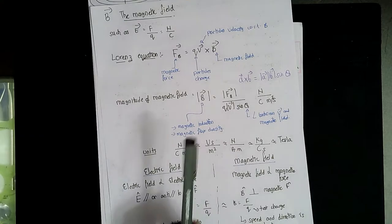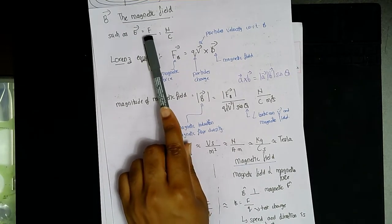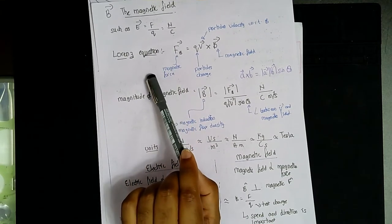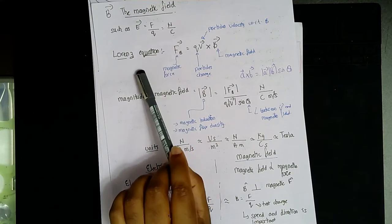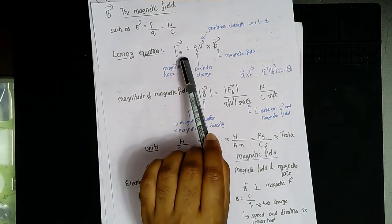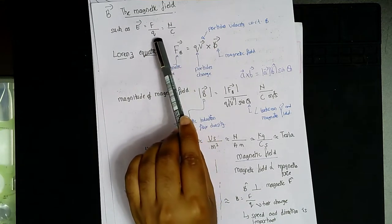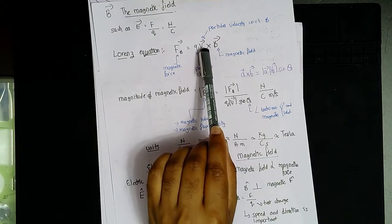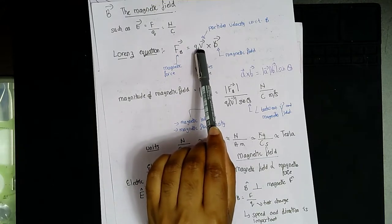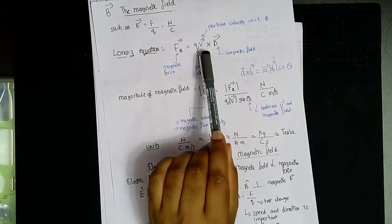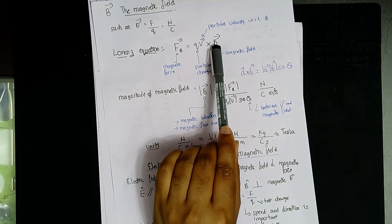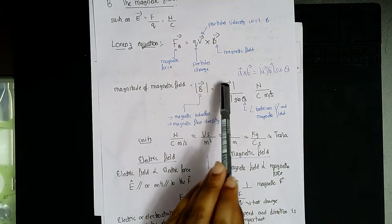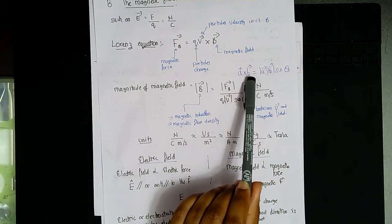Similar to the electric field, which is force per unit charge with units of newtons per coulomb, we have a very similar equation for the magnetic field given by the Lorentz equation. The magnetic force equals the point charge q multiplied by the velocity of the particle crossed with the magnetic field B. The velocity and B are related by a cross product, so this is a vector relationship.